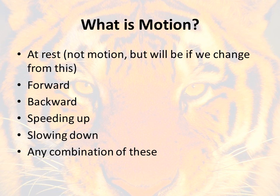Next up, we need a basic understanding of what motion is. If something's at rest, obviously it's not in motion. But it will be in motion if we change it from being at rest — if it moves forward or backwards, that's a change in motion. If it's already moving, it might be speeding up or slowing down — that would also be a change in motion. We need to understand what that looks like on a graph, and really any combination of these is a change in motion.